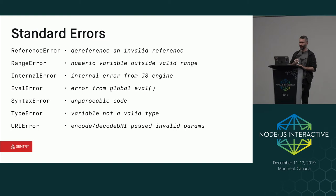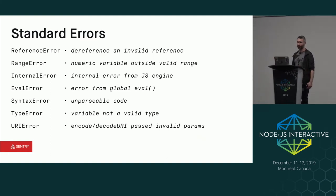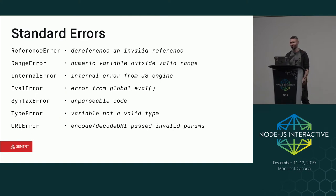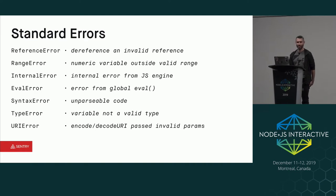There are a bunch of standard errors built into JavaScript. I'm not sure if all of these are in Node — they certainly are in the browser. For example, URI error. These all derive from error and are built into the runtime. Internal error is when the actual underlying JavaScript engine has exploded in a way it doesn't quite understand — so if you see that, V8 is not happy. Eval error happens if you try to run eval in the global scope. You could use these yourself if you wanted to — they're not protected in any way, you can throw them yourself.